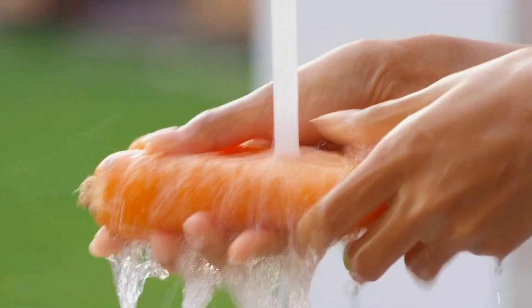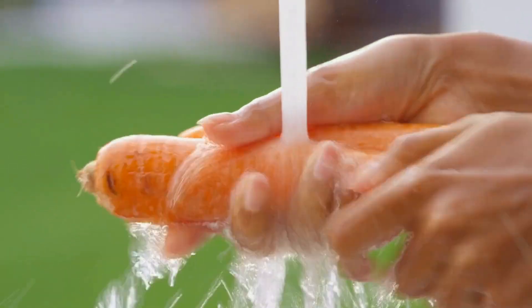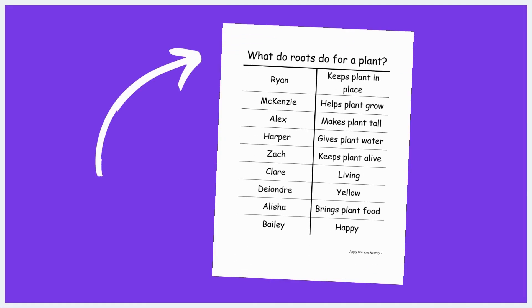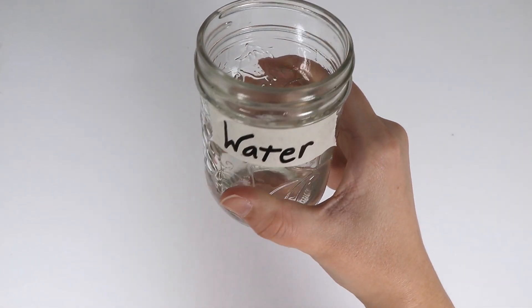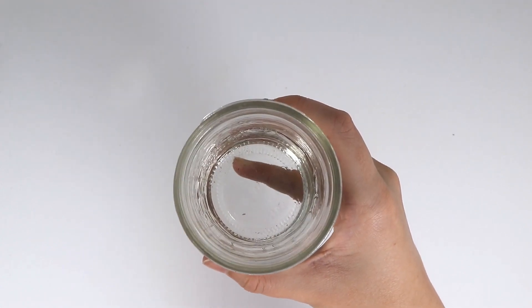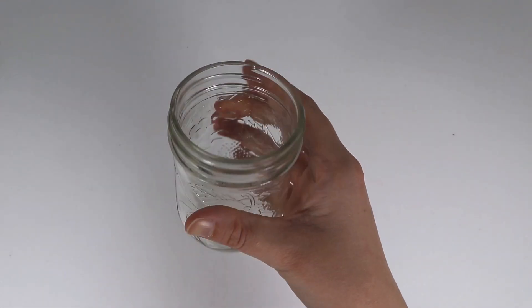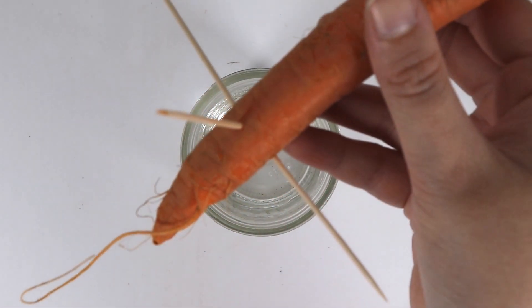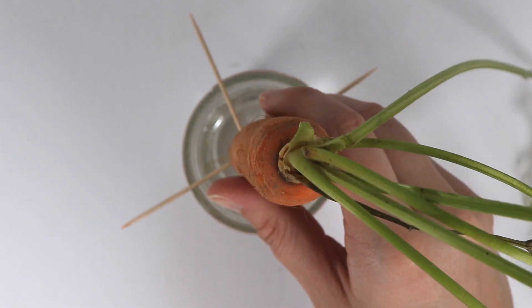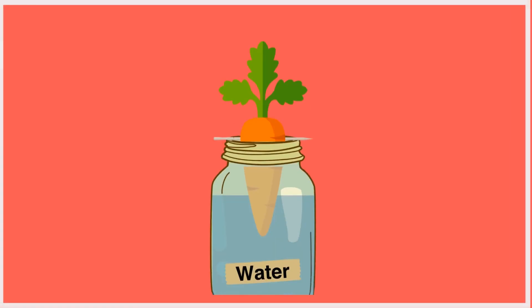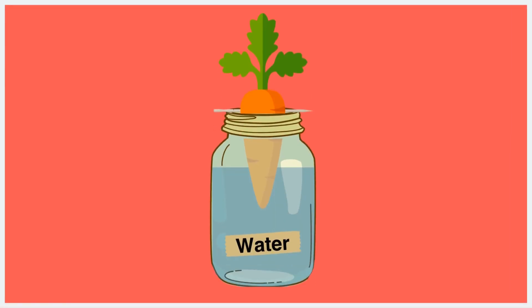Next, wash the carrots and prepare them for children to taste. Ask children what do roots do for plants, and fill out the prediction panel with their answers. To see what the root does for the plant, prepare two jars: one with water and one without, being sure to label the jars. Both jars will have a carrot held up with toothpicks. Make sure water remains in the jar labeled water. After one week, you will be able to see growth from the carrot in water.